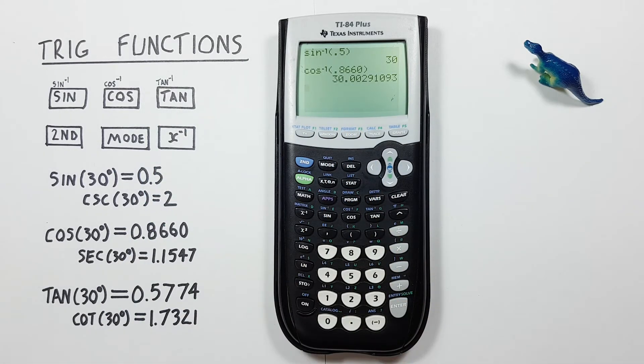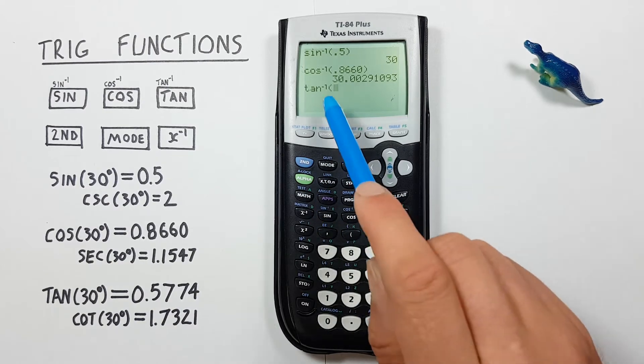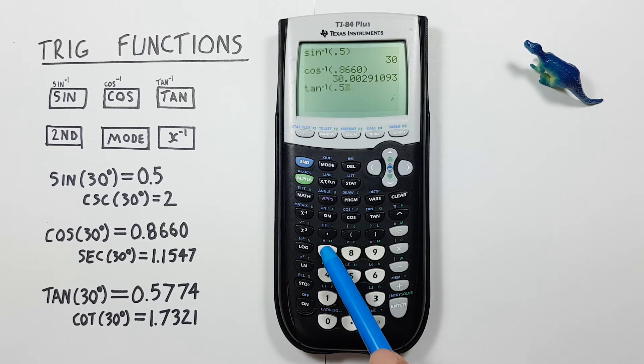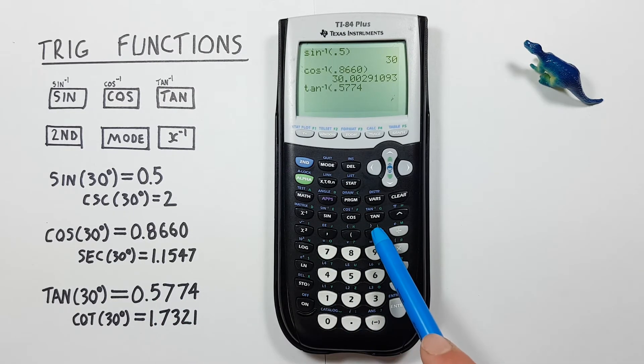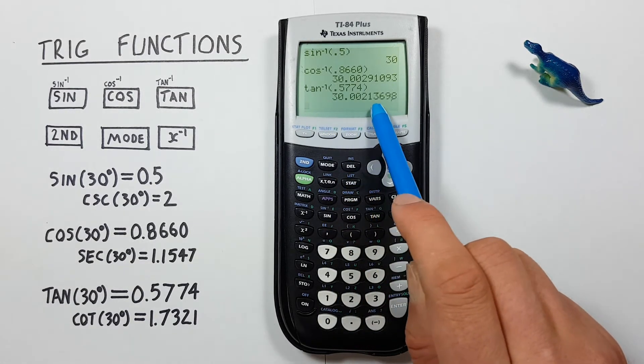Same thing, arc or inverse tan. We go second, tan, enter our 0.5774, close our bracket and press enter. And again we get what would round to 30 degrees.